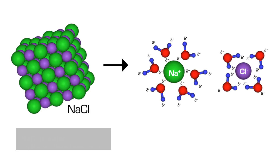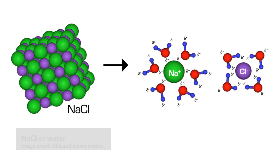The positive and negative ions of salts are also attracted to water molecules. These electrolytes, as they're commonly called, play very important roles in the functioning of our muscular and nervous systems.